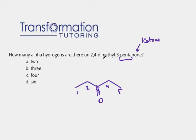Then it says 2,4-dimethyl. So my carbon number 2 and my carbon number 4 have a methyl group. Now that my molecule is complete, I can go ahead and count how many alpha hydrogens it has.